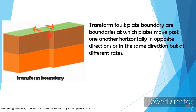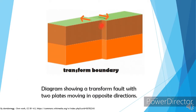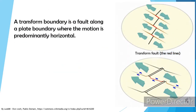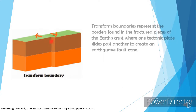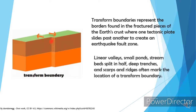Transform plate boundaries are boundaries at which plates move past one another horizontally in opposite directions or in the same direction but at different rates. Most transform plate boundaries are found in the ocean basins, with only a few found on continents. Transform boundary is a fault along a plate boundary where the motion is predominantly horizontal. It ends abruptly where it connects to another plate boundary — either another transform, a spreading ridge, or a subduction zone. Linear valleys, small ponds, stream beds split in half, deep trenches, and scarps mark the location of a transform boundary.